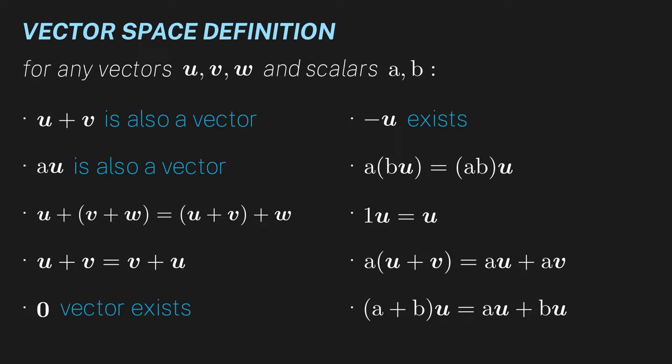It should also be clear that we have a very natural basis for this vector space. We can just take the set of all powers of x, starting with the zeroth power. Using this as a basis, any polynomial can be expressed as some linear combination of elements of this basis.